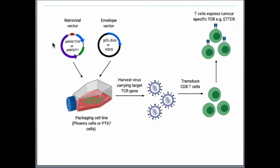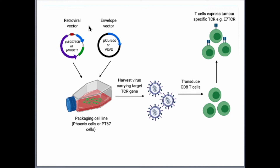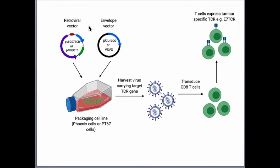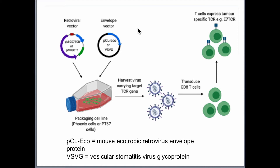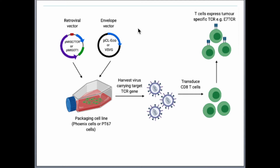These retroviral vectors have a GFP insert — green fluorescent protein — so whenever the TCR is being expressed, whether in transfection or transduction, you can measure it by measuring GFP expression. The envelope vector is also called a pseudotypic vector, and I've used two types: PCL echo (mouse ecotropic retrovirus envelope protein) and VSVG (vesicular stomatitis virus glycoprotein). PCL echo is used for infection of mouse T cells, while VSVG is used for infection of human T cells. PCL echo is ecotropic, while VSVG is pantropic because it allows infection of cell types from different species.